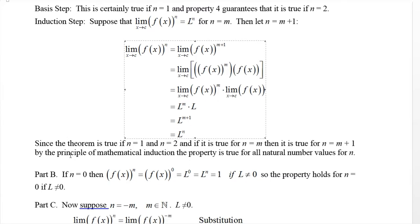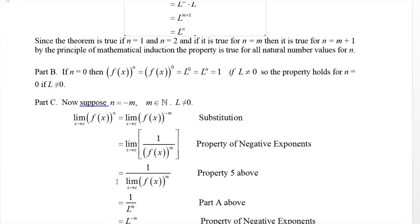Alright, that's the first part that proves it for natural numbers. Now what if n is zero? Well, if we take [f(x)]^n, that's [f(x)]^0, which is just one for everything except when L is zero. And that is L^0, which is L^n, which is one. And certainly that's going to be true. At least if L is not zero, that will be true.